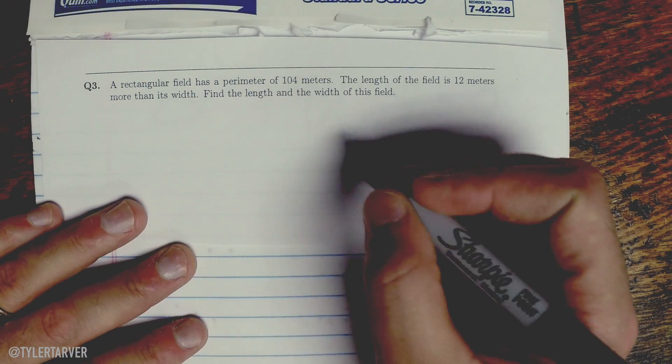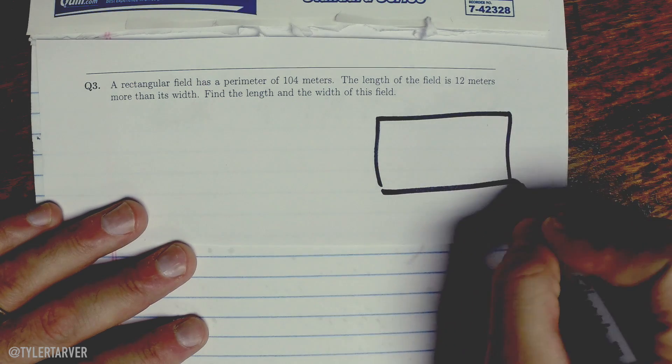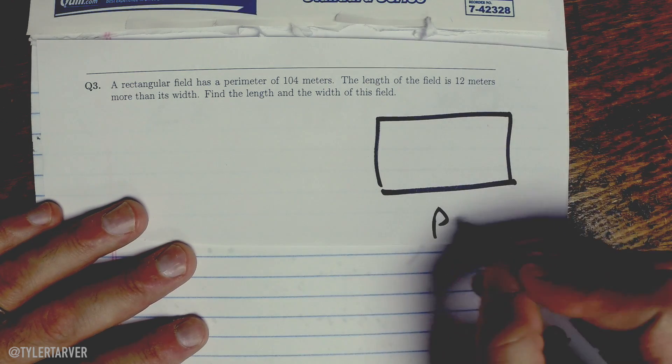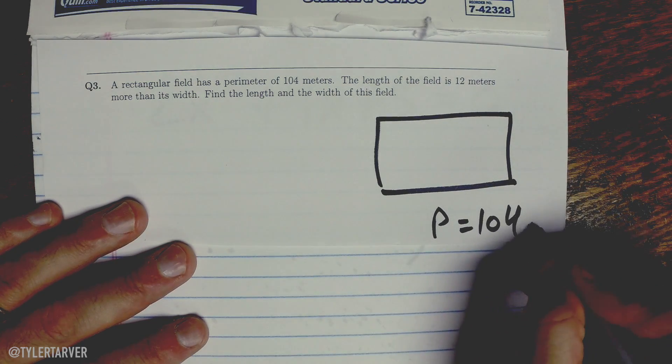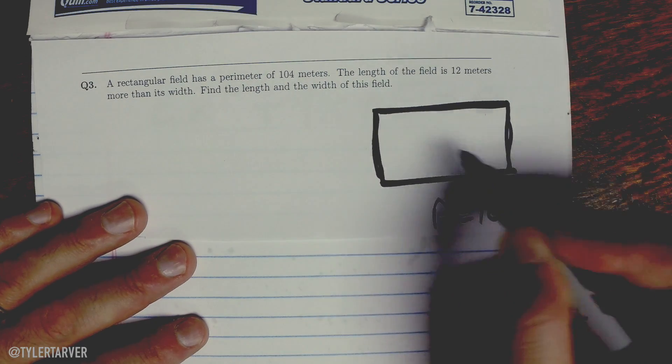Okay, so it says a rectangular football field has a perimeter of 104 meters. So therefore I'm gonna draw a rectangle. I know all the way around it the perimeter is 104 meters. Okay, that means that perimeter is just like the fence, area would have been the yard.